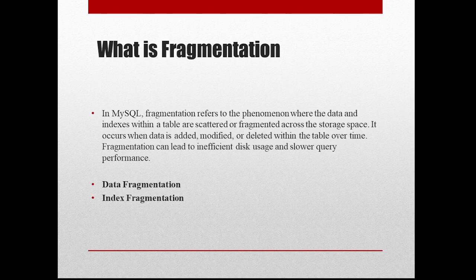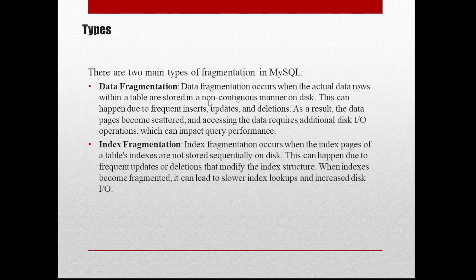We can analyze the table to overcome fragmentation, which we'll see in a later video. Let's first understand what types of fragmentation we can have. Majorly, we can have data fragmentation and index fragmentation. Data fragmentation is when the actual data rows within a table are stored in a non-contiguous manner — one row is stored on the first page, another row on the tenth page, another on the ninth or nth page — making query processing time longer.